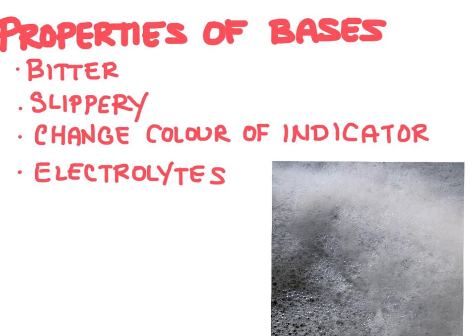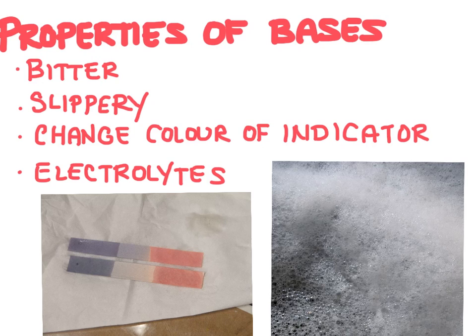And like acids, bases are going to be able to change the color of a chemical indicator. And so for example, a base is going to turn litmus paper a blue color. And then finally bases will also form electrolytes when they're dissolved into water. So they're able to conduct electricity.